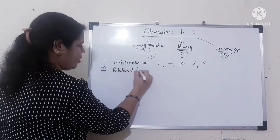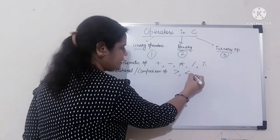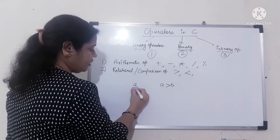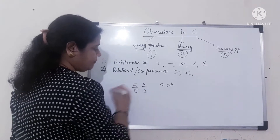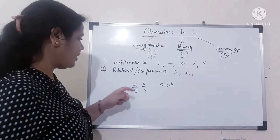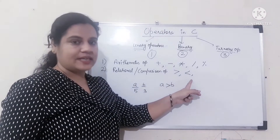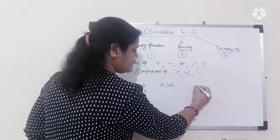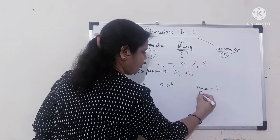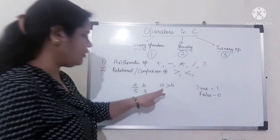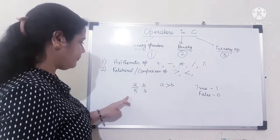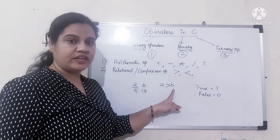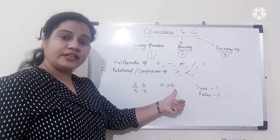Next are relational operators, also called comparison operators: greater than, less than. If you say A greater than B, and A is 5 and B is 3, then A is greater than B — it will give you true or false as an answer. True means 1, false means 0. If A is greater than B it returns 1. If A is not greater than B, it returns 0.